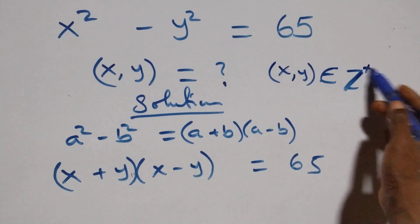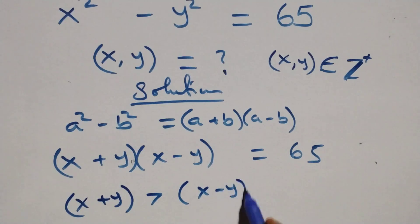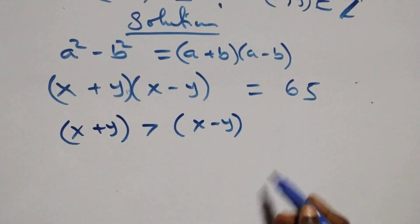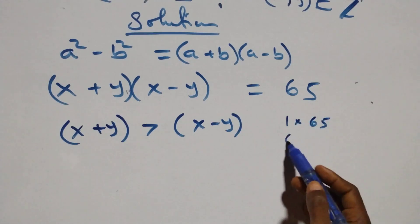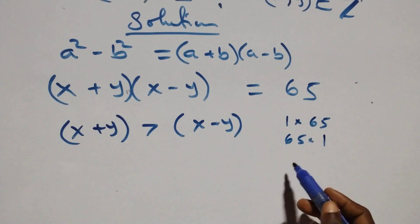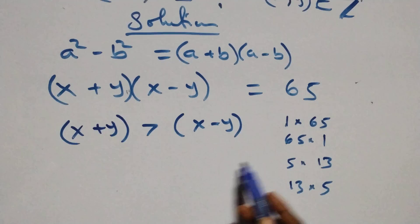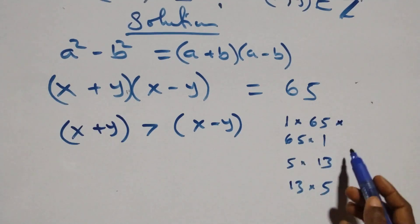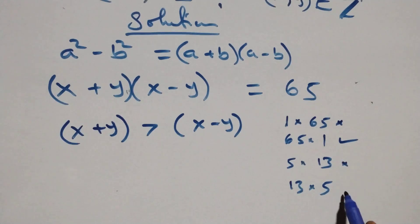Since we are looking for positive integer solutions, the first bracket (x+y) will definitely be greater than the second bracket (x-minus y). For that to happen, we break 65 down into its factor pairs: 65 times 1, or 5 times 13, or 13 times 5. The first condition where the first number is less than the second does not satisfy our requirement, so only the cases where the first factor is bigger apply.